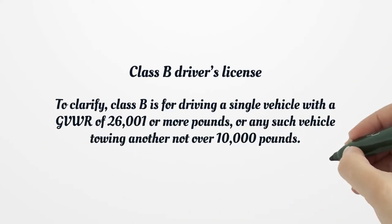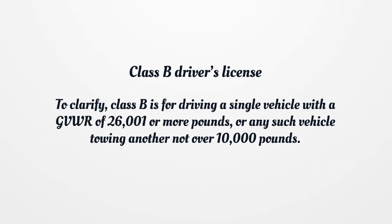Class B Driver's License is for driving a single vehicle with a GVWR of 26,001 or more pounds, or any such vehicle towing another not over 10,000 pounds.